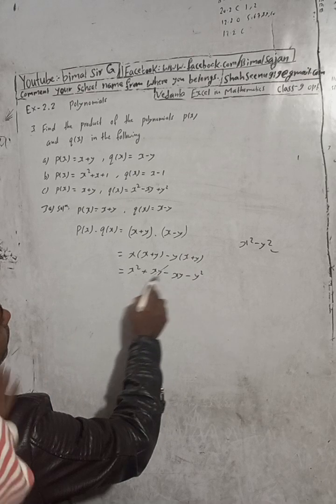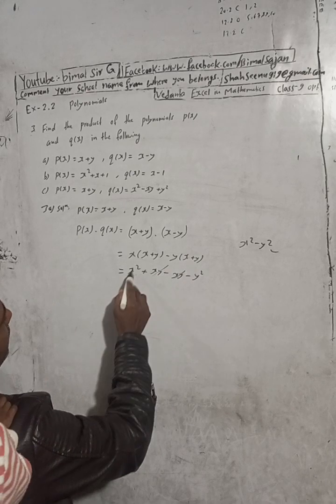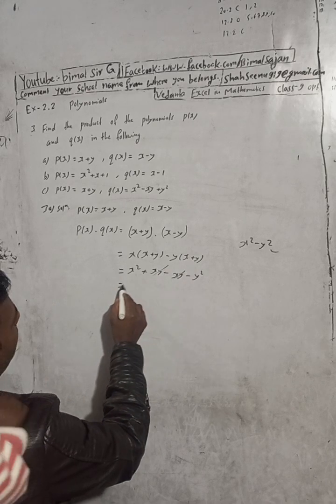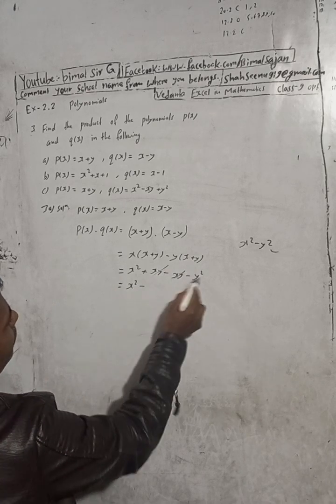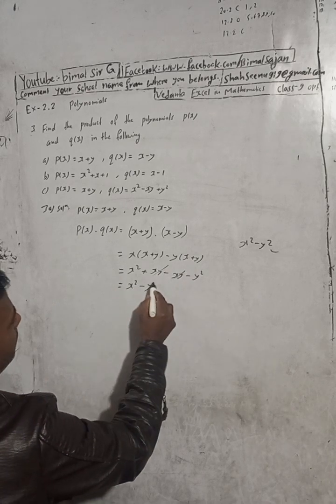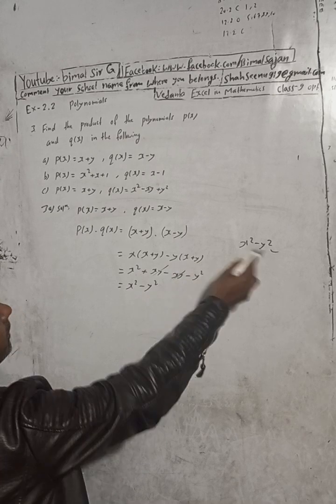After cancellation, we get x squared minus y squared.